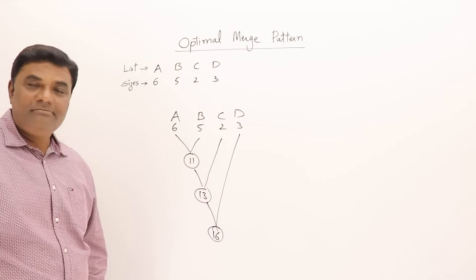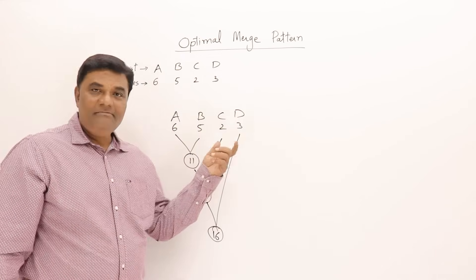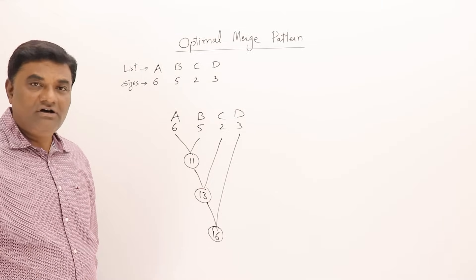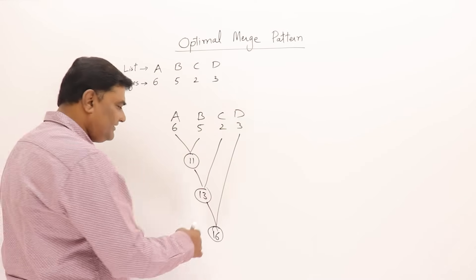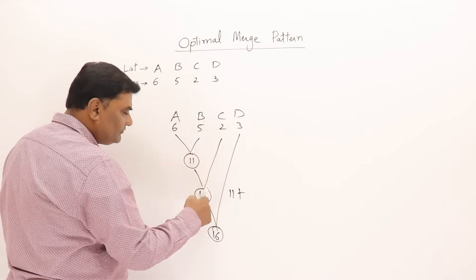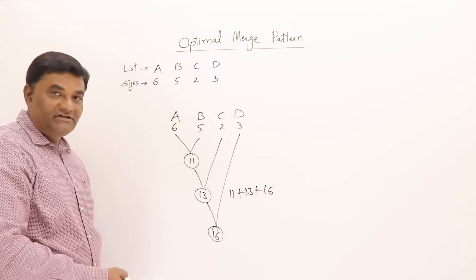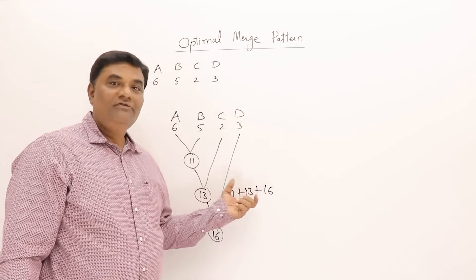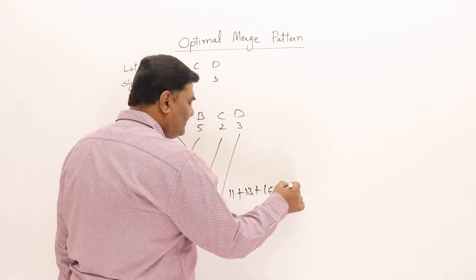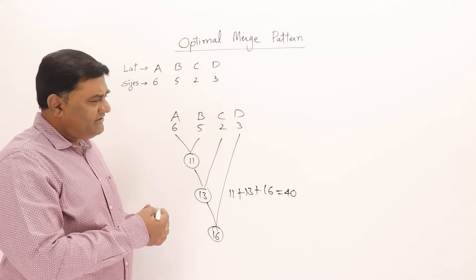The final combined list has 16 elements. But what is the total cost? First I merged 11 elements, then 13, then 16 — the total amount of merging done is 11 plus 13 plus 16, which equals 40.